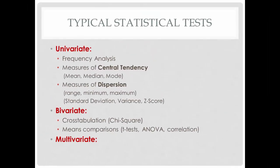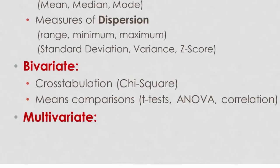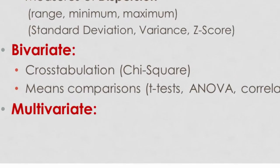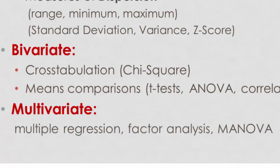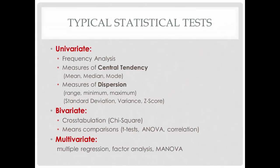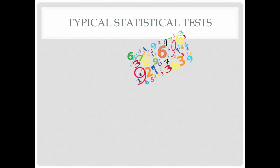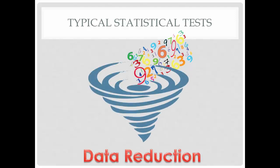If you are interested in interaction effects among three or more variables, you would conduct multivariate statistical tests, such as multiple regression, factor analysis, or MANOVA, multivariate analysis of variance. Don't worry about knowing what all of these are now. At this point, it's just important for you to know that they exist and that they all exist for a single purpose, to reduce the data to make it more comprehensible, enabling you to draw conclusions or make inferences.